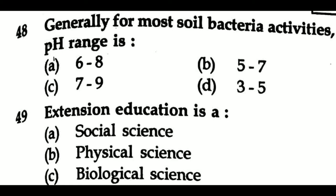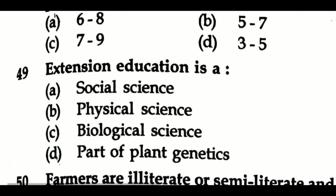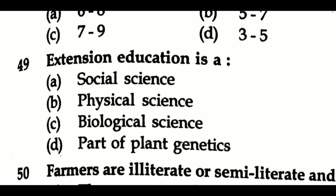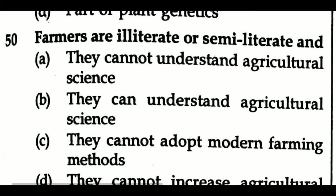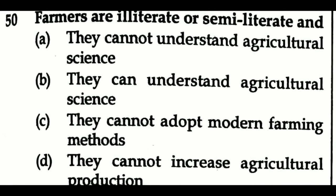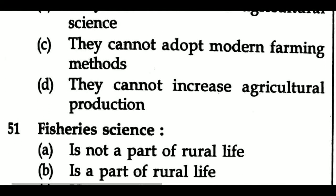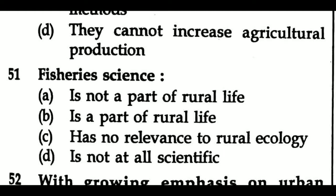Question 48: Generally for most soil bacteria, the pH range of activity is — Option A: 6 to 8, Option B: 5 to 7, Option C: 7 to 9, Option D: 3 to 5. Question 49: Extension education is a — Option A: social science, Option B: physical science, Option C: biological science, Option D: part of plant genetics. Question 50: Farmers are illiterate or semi-literate and — Option A: they cannot understand agricultural science, Option B: they can understand agricultural science, Option C: they cannot adopt modern farming methods, Option D: they cannot increase agricultural production.